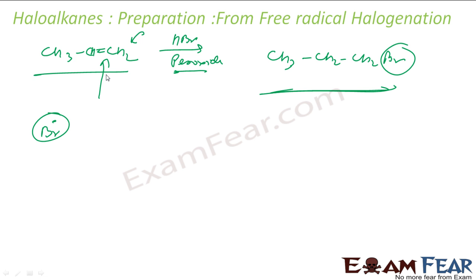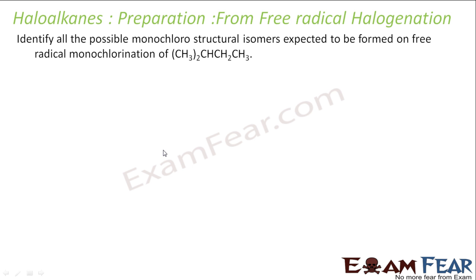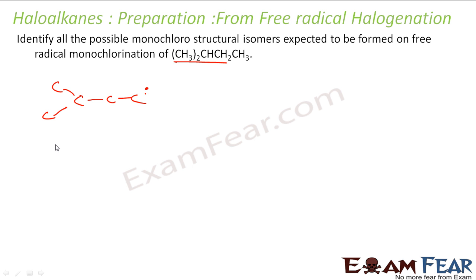Now let us look at an example question: identify all the possible monochloro structural isomers expected to be formed from free radical monochlorination of this compound. Chlorine will replace one of the hydrogens — where are the possible positions? It can replace this hydrogen, this hydrogen, this hydrogen, or this hydrogen. But if you see, the hydrogens marked with four dots are all the same, so there are only four possible distinct options.